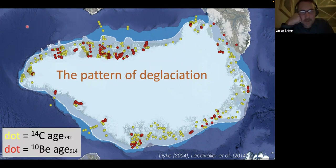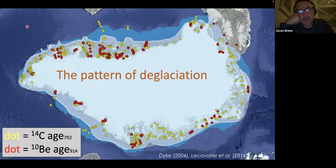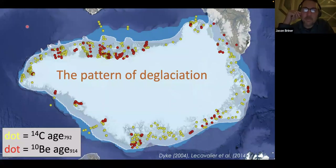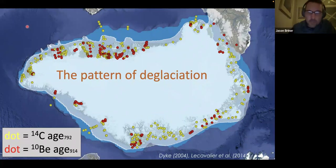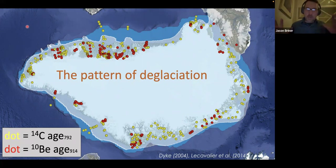What you're seeing on this map is a yellow dot for every radiocarbon date on or around Greenland, and a red dot for every cosmogenic nuclide exposure age — in this case beryllium-10 — around the perimeter of Greenland. These kinds of data combined with geomorphic reconstructions of moraines, outwash plains, and deltas help us piece together what the ice sheet did between the Last Glacial Maximum and its present configuration.